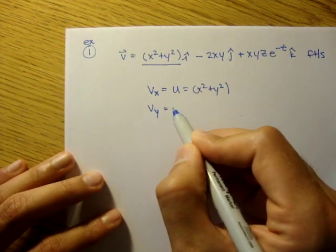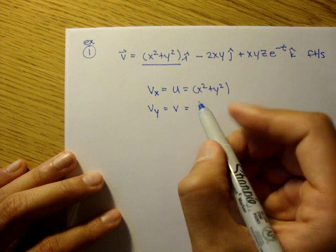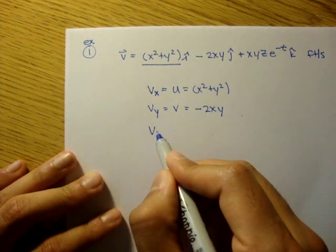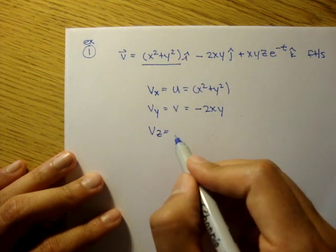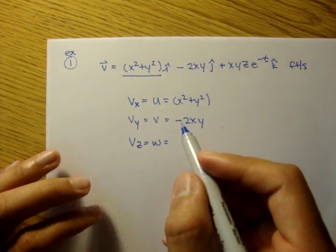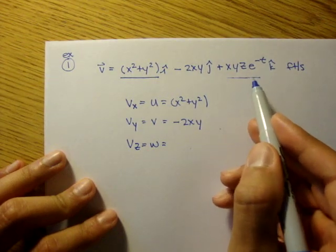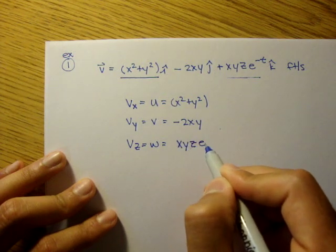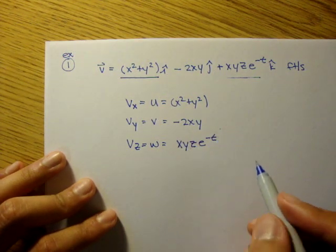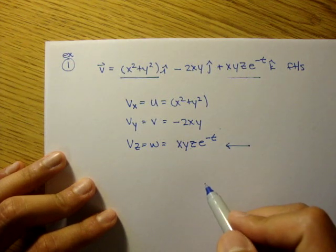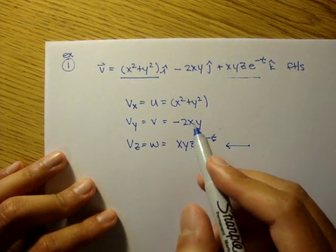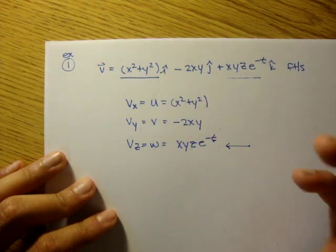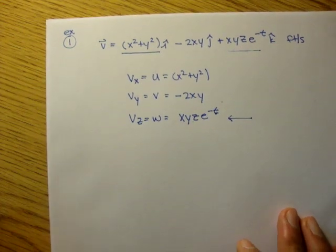The y component, which is also v, is equal to negative 2xy. And the vz is equal to, I think, u, v, w, and that's equal to the k term, xyz e to the negative t. And you notice that only the z component has the time variable t. There may be velocity fields where every single component has a time variable t, so just look out for that.